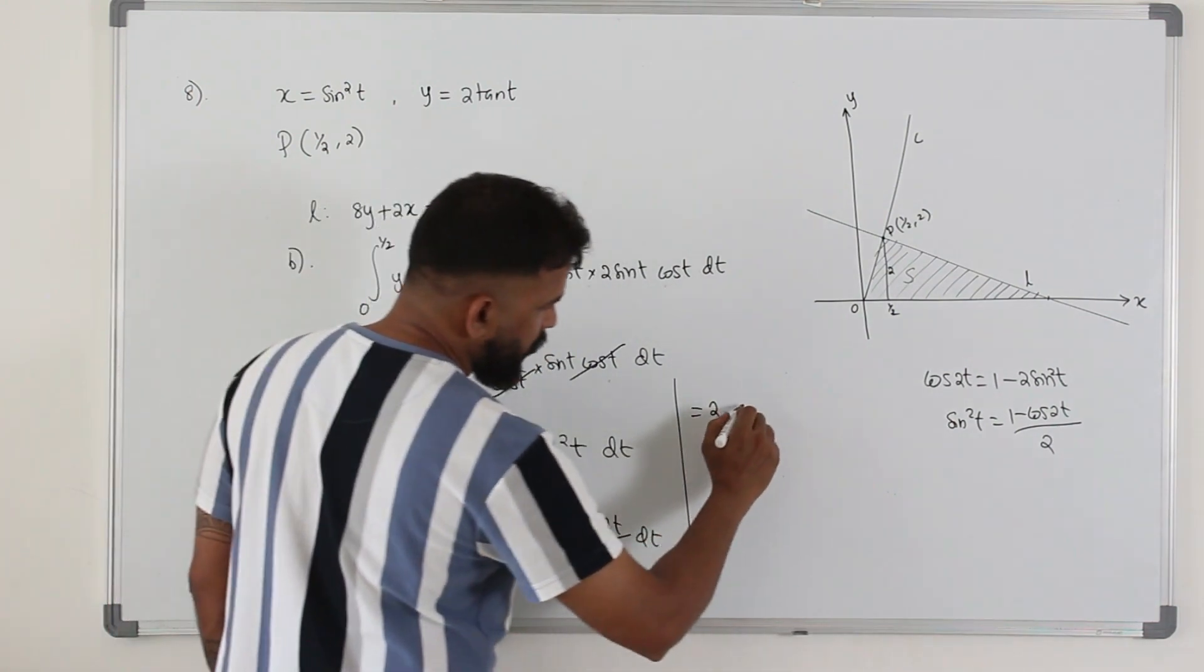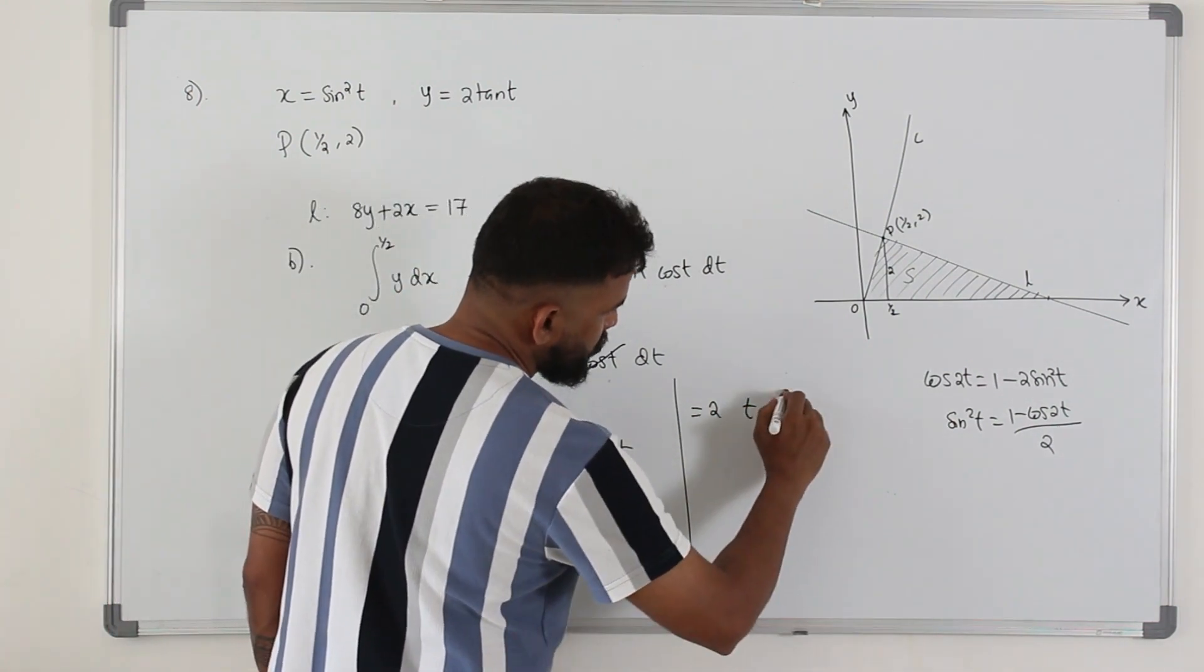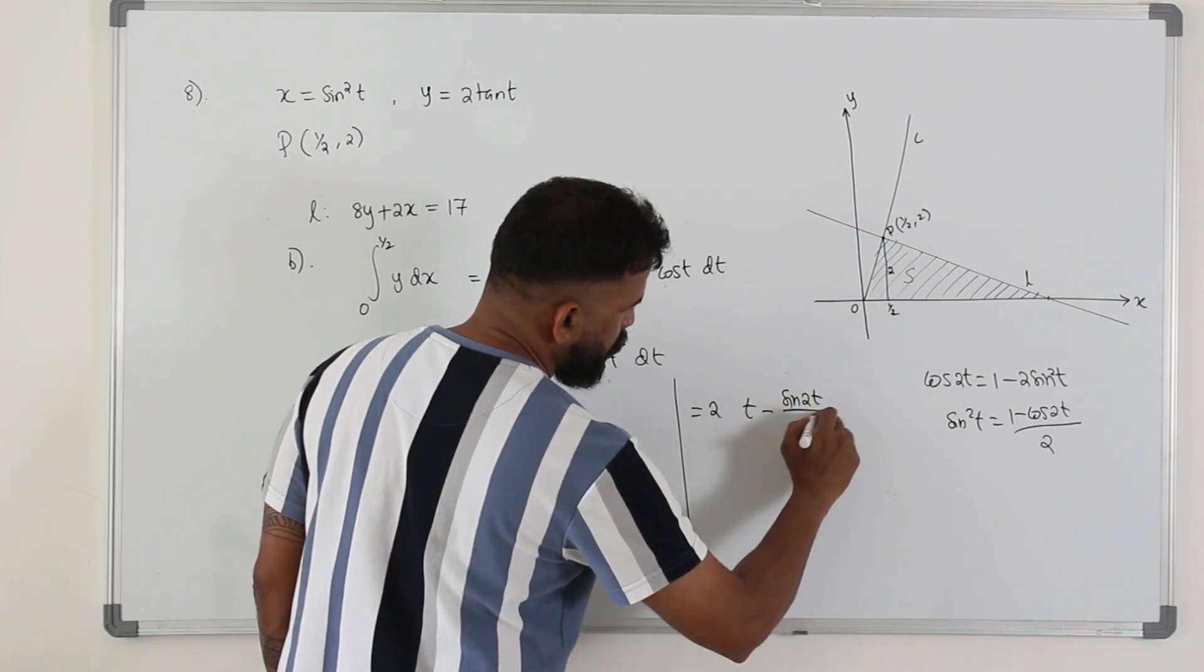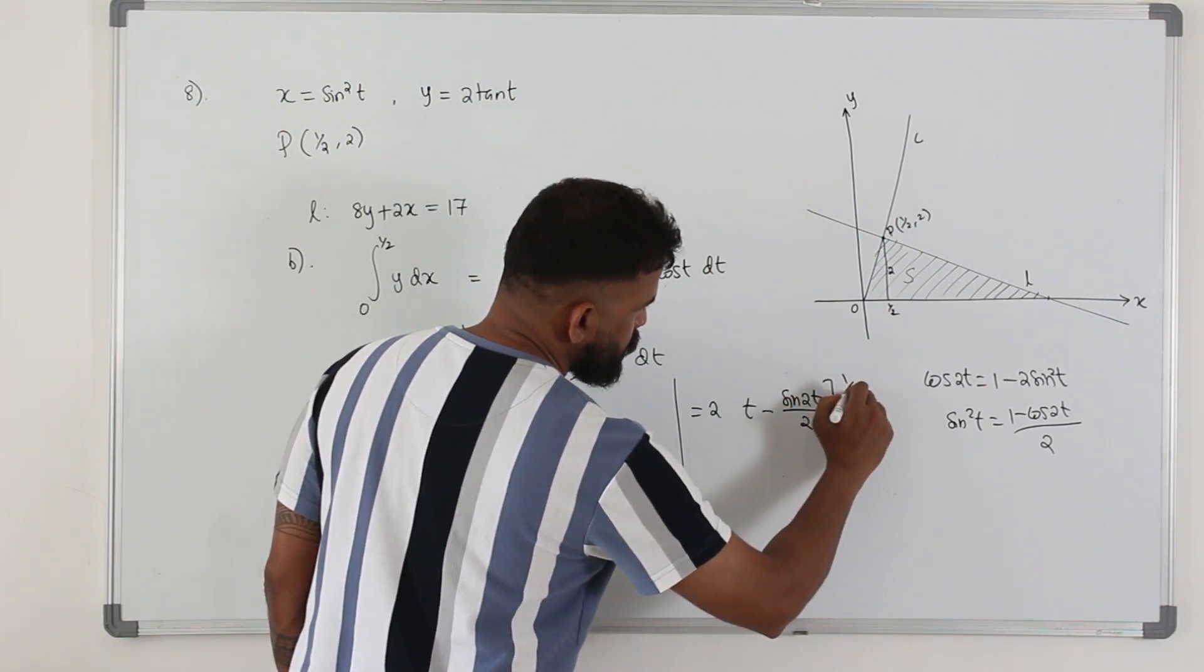So you will get 2. Integral of 1 is t. Integral of cos 2t is sine 2t over 2, 0 to half.